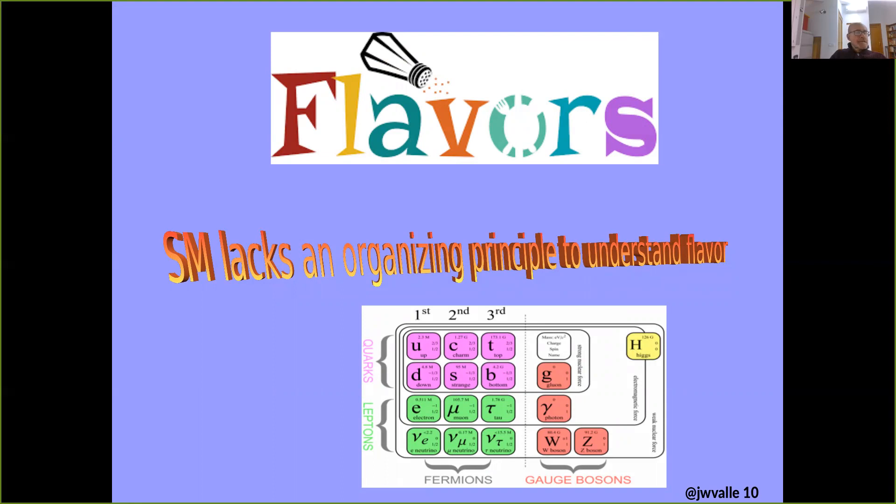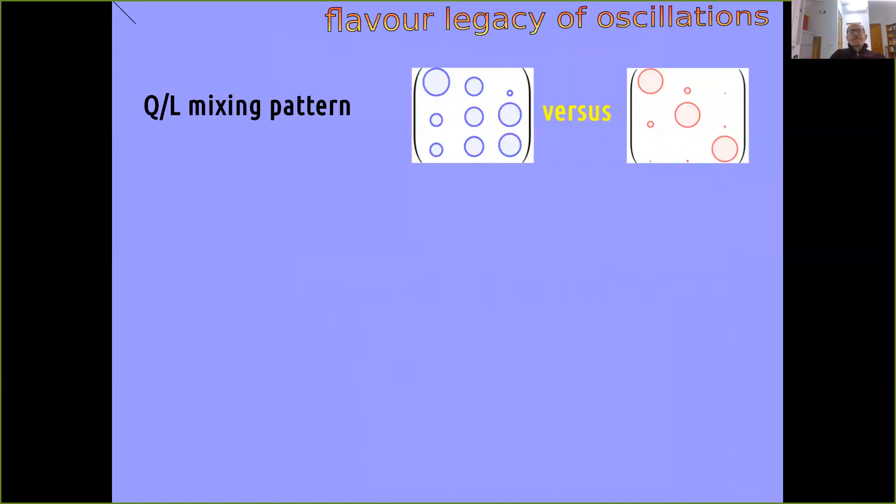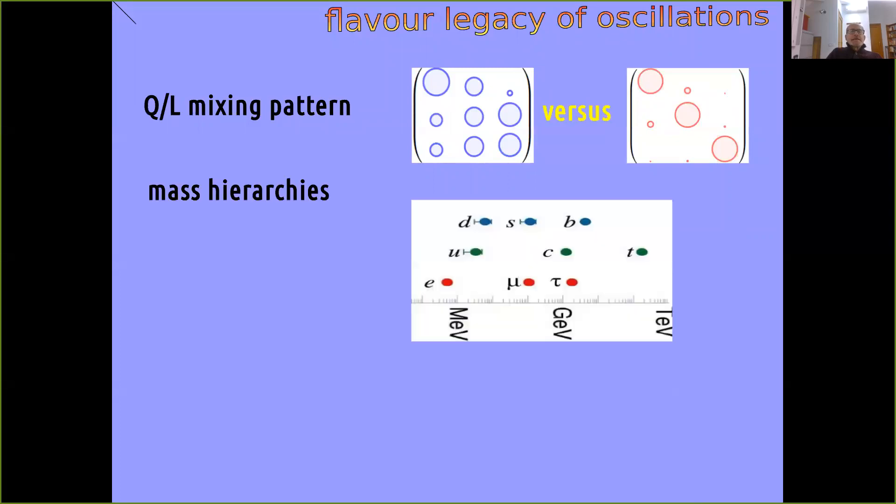By Type I seesaw. Now I turn to the flavor problem, probably the deepest in particle physics. And here the standard model lacks an organizing principle in terms of which to understand family replication, family masses and mixings. And oscillations here leave an important legacy, namely they have demonstrated that leptons mix rather differently from quarks, which may lead us to revise our prejudices concerning unification.